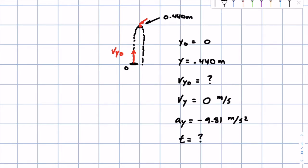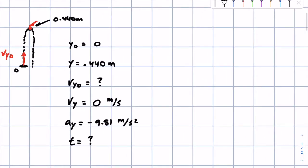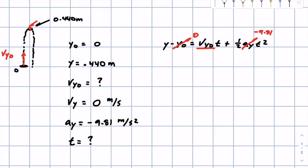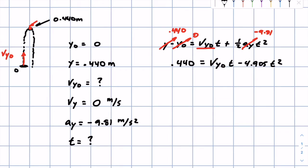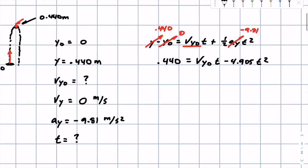We don't know how long it takes to reach the top, but with the information given we can solve this. Using the long equation first: y − y_initial = v_y0 · t + ½ · a_y · t². With initial position zero, acceleration −9.81, and final y = 0.440 meters, this becomes: 0.440 = v_y0 · t − 4.905t². We still have two unknowns, so we need to move on to the short equation.